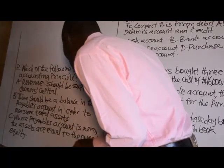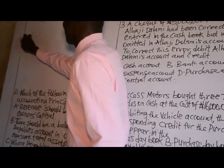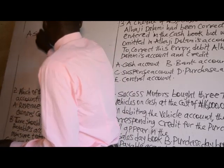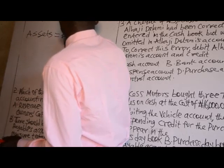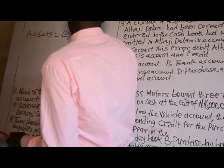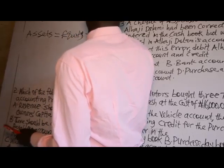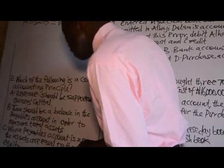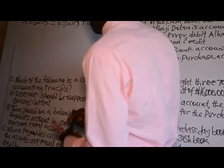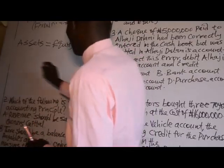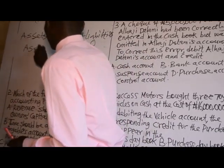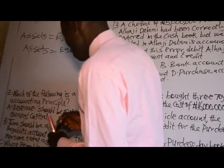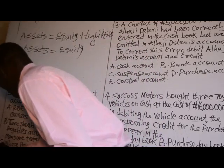Using the accounting equation: Assets = Equity + Liabilities. If payables — which is a liability — is zero, then liabilities equal zero, and therefore Assets = Equity. So option C is correct.